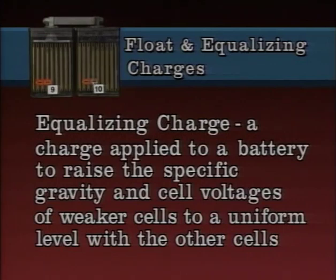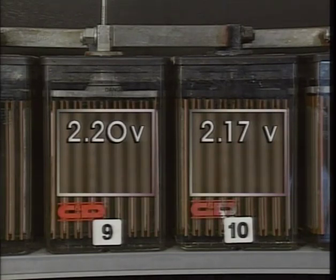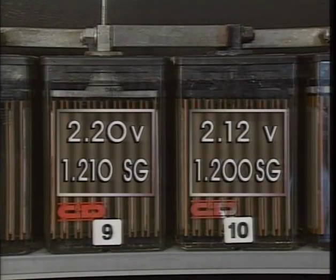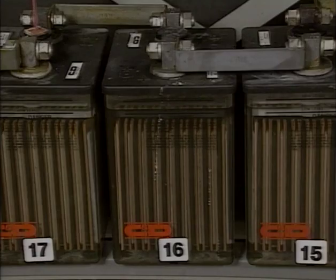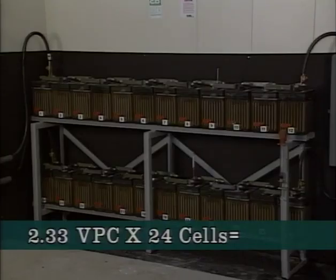An equalizing charge is a charge applied to a battery to raise the specific gravity and cell voltages of weaker cells to a uniform level with the other cells. When battery cells are in service, cell voltages tend to become unbalanced. In general, if the voltage of any cell falls below 2.13 volts, or if the specific gravity of a cell falls 10 points below its full charge value, an equalizing charge should be given. A general equalizing voltage guideline for lead antimony and lead calcium batteries is 2.33 volts per cell — for 24 cells, that gives a total equalizing output voltage of 55.92 volts.